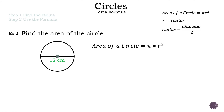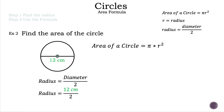That measurement represents the diameter because the line above it starts on the edge, goes through the center, and continues to the opposite side. So 12 centimeters is the diameter. We can see at the top right of the screen the formula for radius: radius equals diameter divided by 2. We need the radius because the formula pi r squared uses r, not d. Substituting, we get 12 centimeters divided by 2, which equals 6 centimeters — our radius.